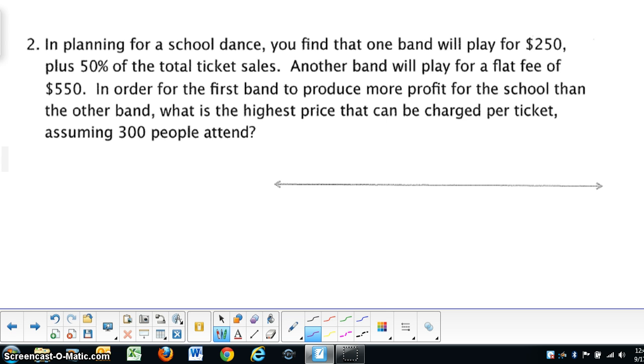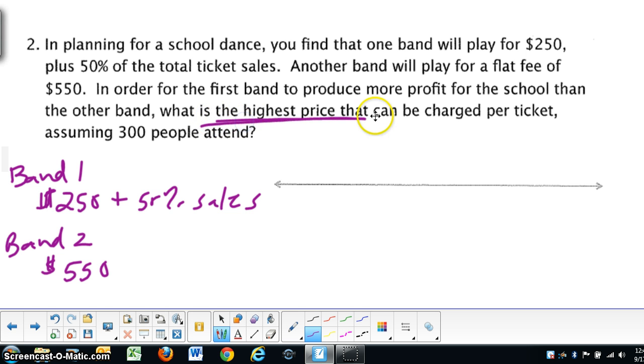And the next one, it's a little long, so let's break it apart a little bit. It says that one band that you can get for $250 plus 50% of the sales, and it says that band number 2, you can buy for a flat fee of $550. Okay, so in order for the first band to produce more profit for the school than the other band, what is the highest price? So we're looking for a dollar amount that we can charge per ticket. Now, this number right here does not represent just the ticket price. This sales would be how many people attend, how many, times the ticket cost. So you've got to keep that in mind when we're trying to solve this problem. Okay, so let's set up the inequality.